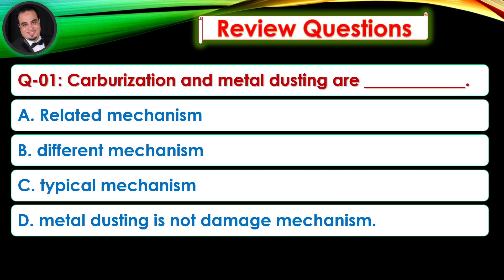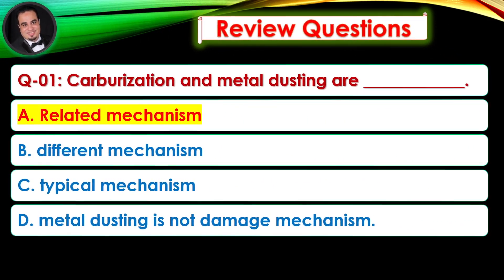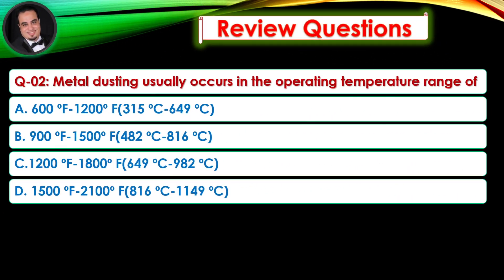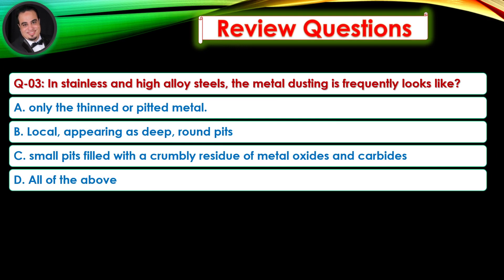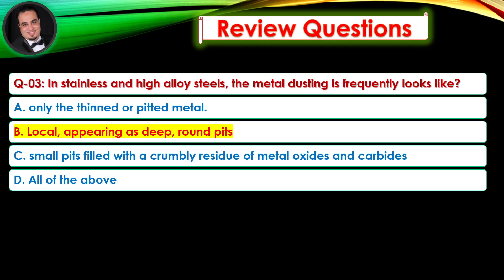Review questions: Question 1 — Carburization and metal dusting are... Answer is A. Question 2 — Metal dusting usually occurs in the operating temperature range of... Answer is B. Question 3 — In stainless and high alloy steels, the metal dusting frequently looks like... Answer is B.